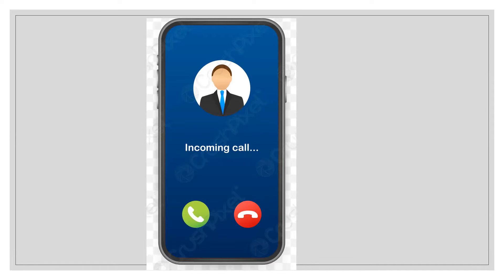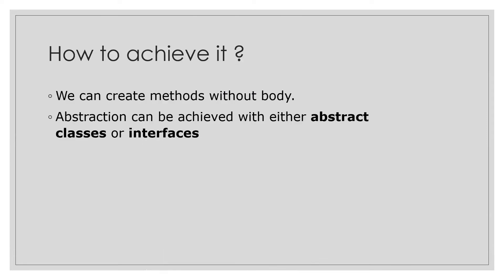Now let's understand how to achieve abstraction. When we say the business logic will be hidden, that means we're going to create methods without body — methods will be created but there will be no business logic or body inside them. We can achieve abstraction with either abstract classes or interfaces, and we're going to understand both in this video.